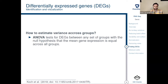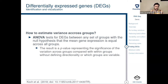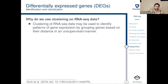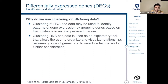To estimate variance across groups we use ANOVA, which tests for differentially expressed genes between any set of groups with the null hypothesis that mean gene expression is equal across all groups. The result is a p-value representing the significance of the variation across groups compared with within groups, without defining directionality. Note that because we are using p-values and we should not trust p-values alone, the keyword here is again replication — if we are repeating our experiments, we can trust our results better. Clustering of RNA-seq data may be used to identify patterns of gene expression by grouping genes based on their distance in an unsupervised manner, and is used as an exploratory tool to organize and visualize relationships between groups of genes.